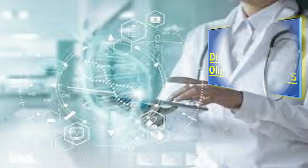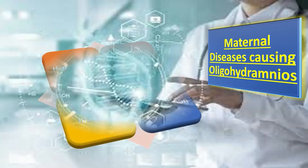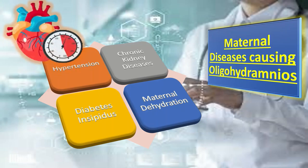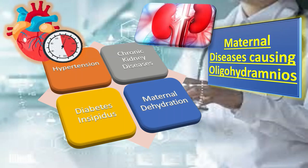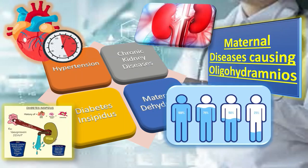The maternal diseases which cause oligohydramnios include four main conditions: first, hypertension — meaning increased blood pressure; second, chronic kidney diseases of the mother; third, diabetes insipidus; and fourth, maternal dehydration.